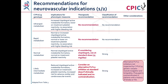Alternative platelet inhibitors not impacted by CYP2C19 variation include ticagrelor and ticlopidine. Prasugrel is contraindicated in patients with a history of stroke or transient ischemic attack.